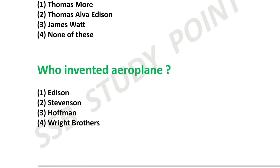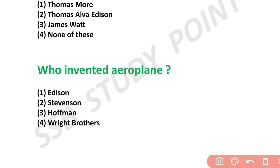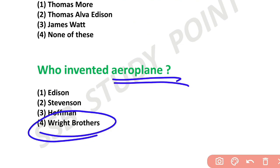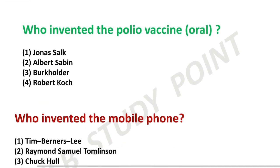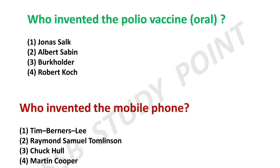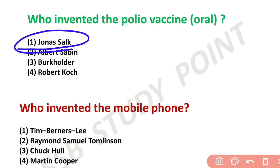Who invented the aeroplane? The aeroplane is used in general knowledge questions — like television, pencil, and mobile. The aeroplane was invented by the Wright Brothers. Who invented the Polio vaccine? Jonas Salk invented the Polio vaccine.